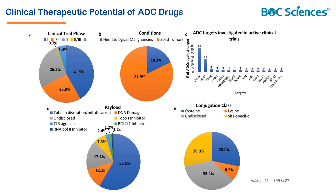There are 43 disclosed targets organized by the number of ADCs designed to recognize them. Most targets are under close investigation by a single ADC, while some are being investigated by various ADCs. Of these 82 novel ADCs, most employ tubulin-disrupting payloads, followed by DNA-damaging molecules, topoisomerase-I inhibitors, and unique payloads such as TLR agonists, a BCL-2-XL inhibitor, and an RNA polymerase-2 inhibitor. Most ADCs under clinical investigation utilize conventional cysteine conjugation or site-specific conjugation platforms, while few conjugate to surface lysines. Many techniques remain undisclosed.